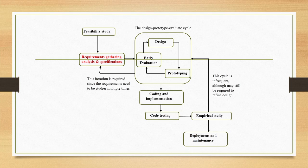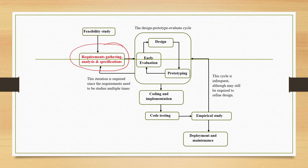Just to recap, we are currently in the requirement gathering stage, discussing topics related to this stage. In subsequent lectures, we will cover the other stages as well. There are many stages in the interactive system development life cycle. The first stage is feasibility study, which we are not covering in detail here. We are currently in the requirement gathering stage.